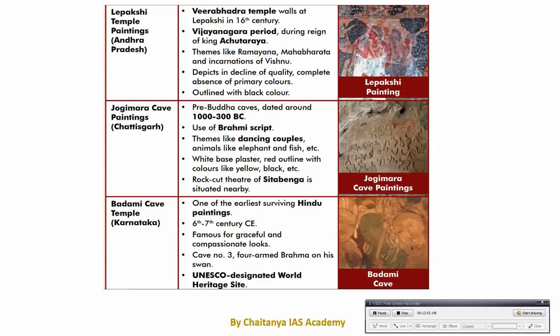The next important site is Lepakshi Temple, found in Andhra Pradesh. In the Lepakshi Virabhadha Temple, the major paintings on its wall belong to the Vijayanagara period, promoted by Achyutaraya, king of the Vijayanagara dynasty. Major themes are Ramayana, Mahabharata, and Puranic stories about the incarnations of Vishnu. In this painting the background color is majorly black and red color has been used to denote figures. The next cave painting is Jogimara Cave painting, which is a pre-Buddhist cave painting — one of the oldest cave paintings found in India, painted around 10,000 BC. A unique feature is that Brahmi script has been found along with the paintings.